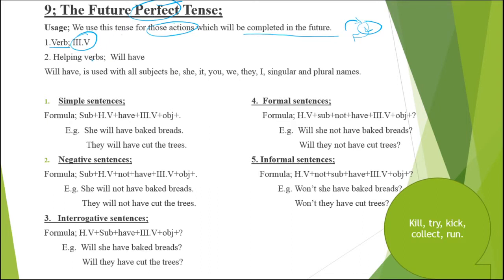The second important point is the helping verb. There were two helping verbs in this tense: 'will have' and 'shall have.' Now today 'shall have' is removed and is not used as a helping verb. Keep in mind, 'will' and 'shall' are helping verbs and are also used as modal auxiliary verbs. When used as modal auxiliary verbs, 'shall' is not removed — you can say 'you shall come,' 'you shall do this.' We have one helping verb: 'will have,' used with all subjects.